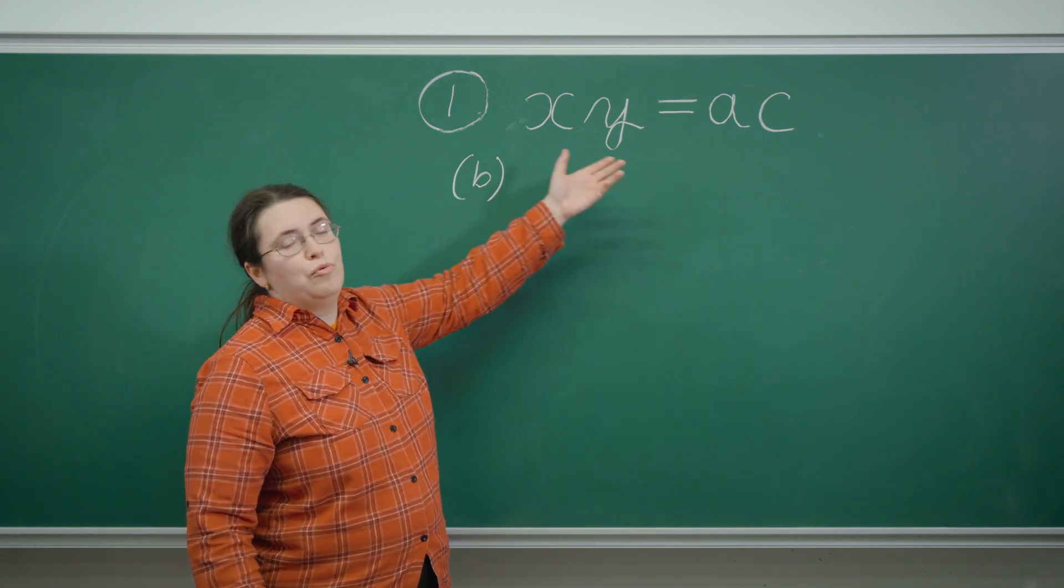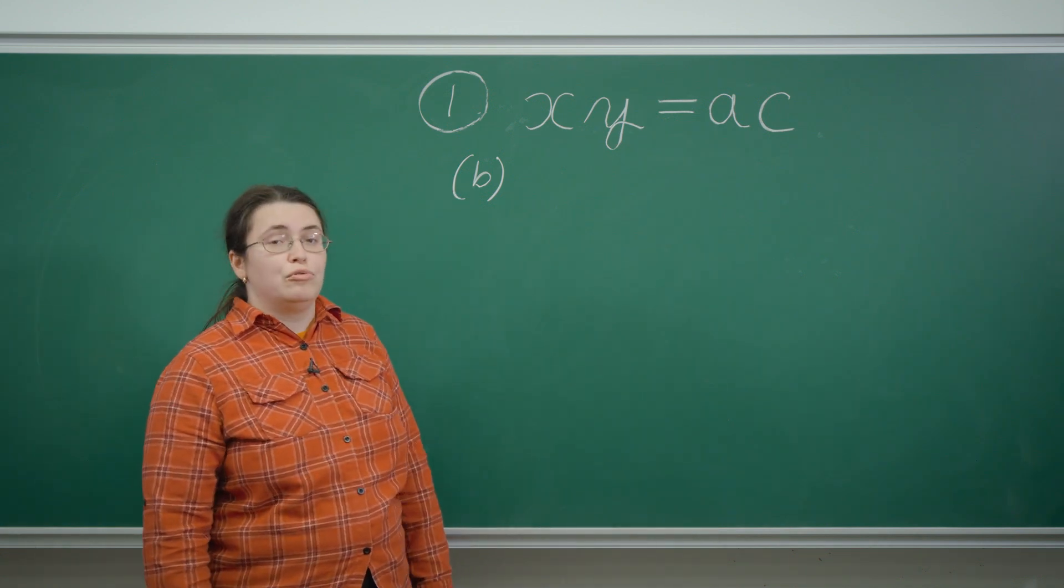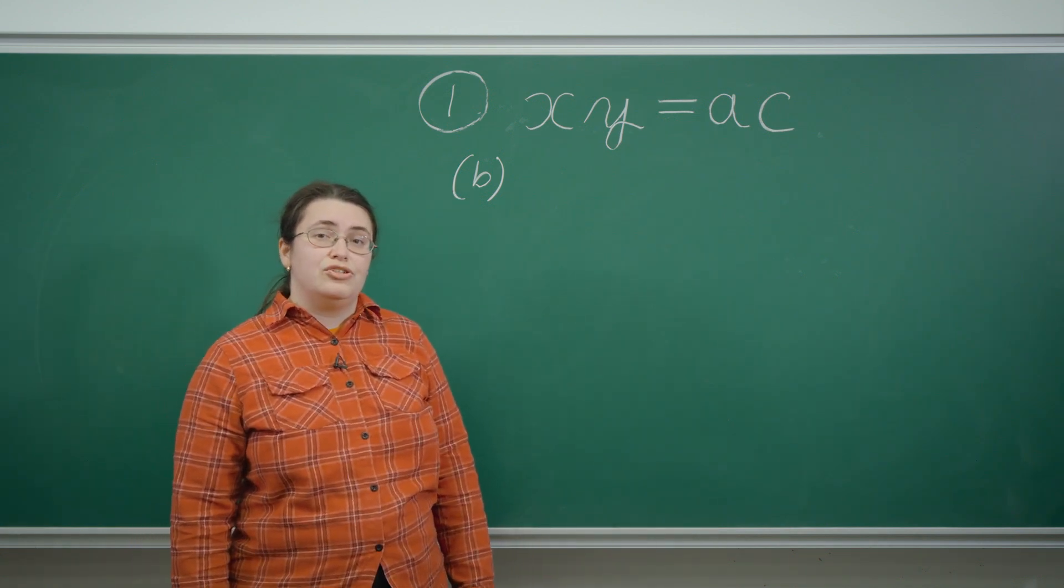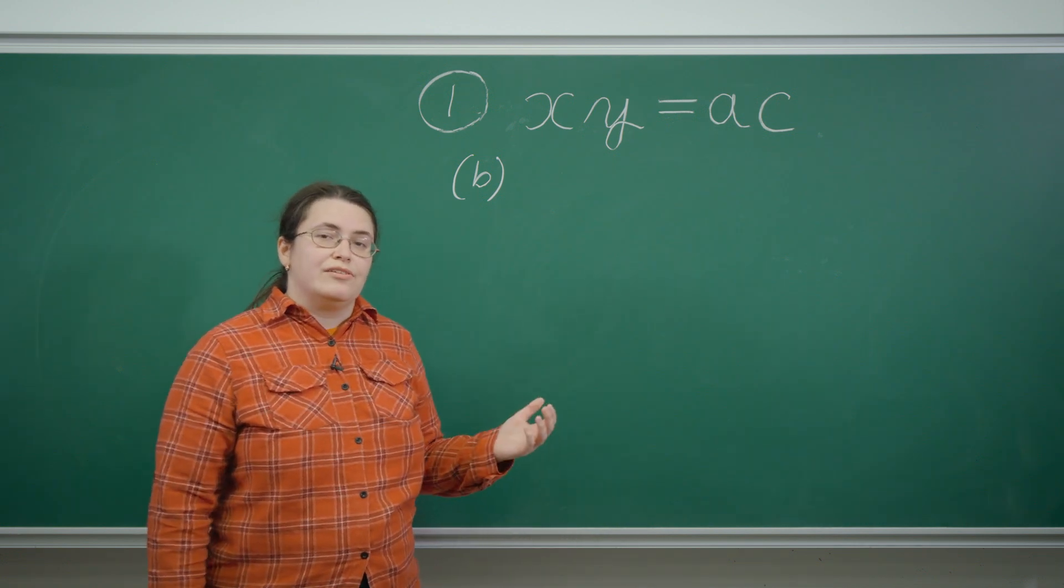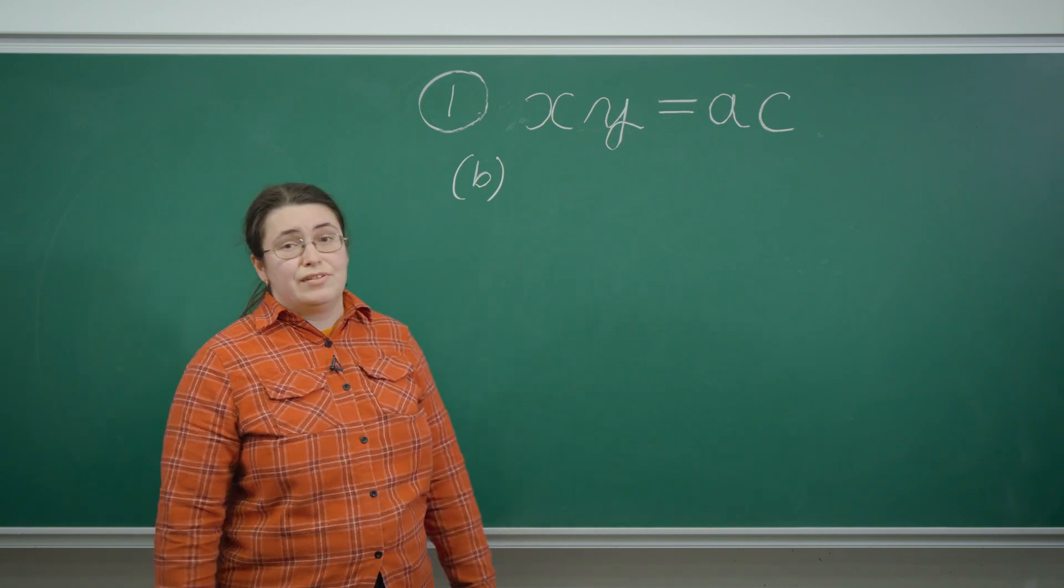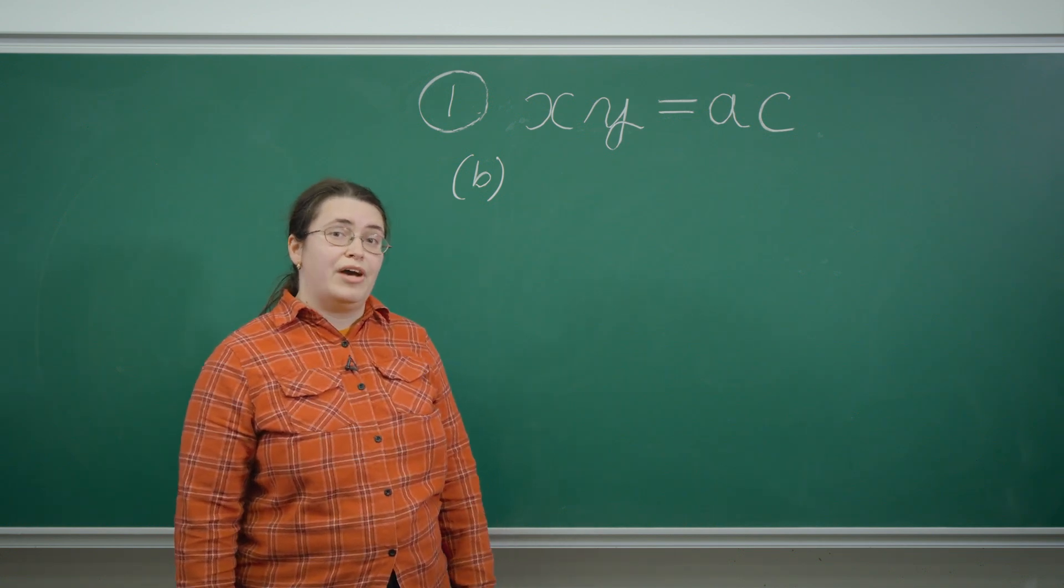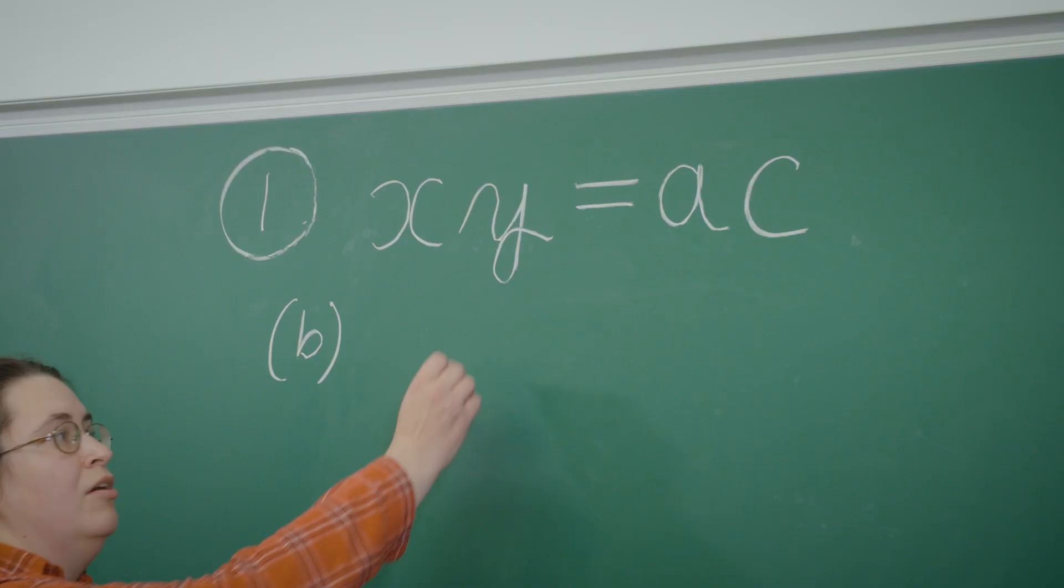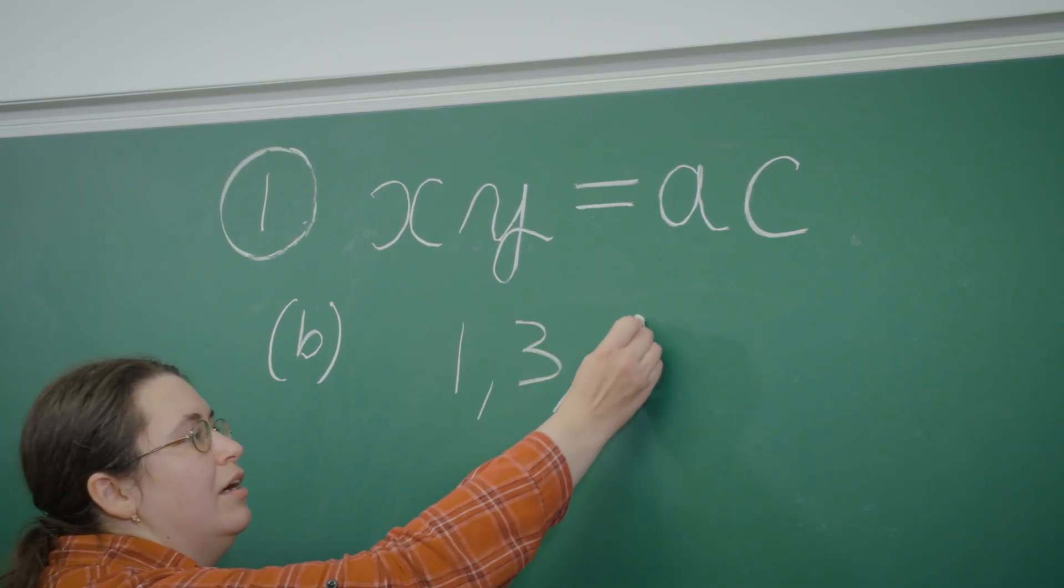Bearing in mind that all the values here are in centimeters. We're also told that the side lengths are integers and therefore we need to be looking at factors of the number 9. Positive factors to be specific because they're side lengths and therefore have to be positive. The positive factors of 9 are 1, 3, and 9.